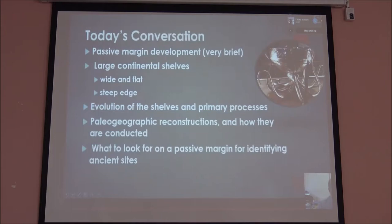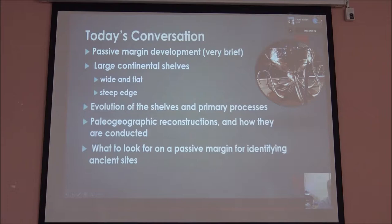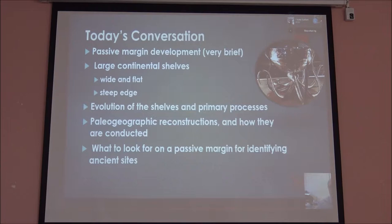What I want to do is take you through the development of the passive margin. Look at large continental shelves — our continental shelf is 100 to 125 kilometers wide, very different than some of the areas that you've been looking at. It's wide and flat, with a fairly steep edge. We'll look at some of the primary processes. We're getting ready to have a large impact along our coast next week from a hurricane. And we'll talk about how we go about trying to identify the potential of sites, and the development of paleogeographic studies and how they're conducted.